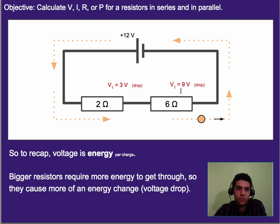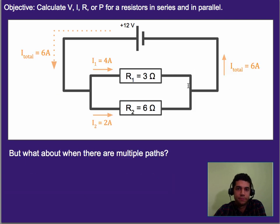So to recap, voltage is basically energy, technically energy per charge. And bigger resistors require more energy to get through, because they have more resistance. What this means is it's going to cause a bigger voltage drop. Go ahead and write that information down. You might try and repeat that to yourself for a second and go back and rewatch this if it's a little bit confusing.